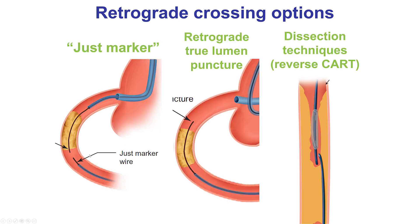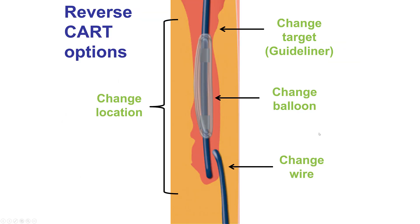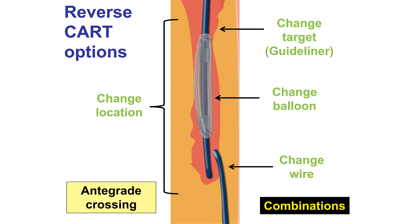The options were: JABBER, which wouldn't work here given the sub-intimal location; retrograde true lumen crossing, which also didn't work; or reverse CART, which is the most common retrograde crossing technique. If there is difficulty with reverse CART — which was the case here — there are different ways to make it work: change the balloon to a larger one, change the retrograde wire, use a guide extension to make a different target for the retrograde wire, or change the location of the attempted reverse CART. All of these techniques were actually applied in this case.